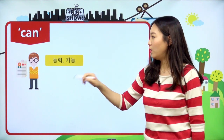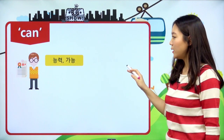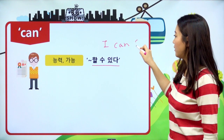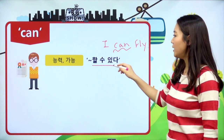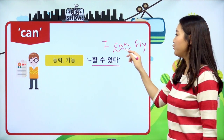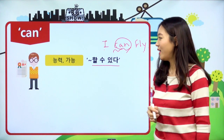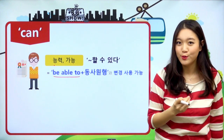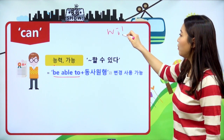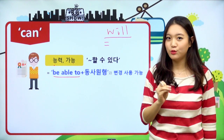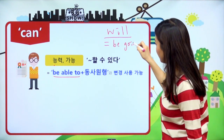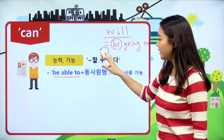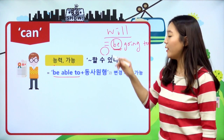첫 번째 조동사 can의 뜻이에요. 능력, 가능입니다. 해석은 '뭐뭐 할 수 있다'라고 해석이 되고, I can fly에서 can이 '할 수 있다'라고 해석이 되는 거예요. 그런데 능력이나 가능을 나타내는 조동사 can은 be able to와 바꾸어 사용할 수 있어요. 지난 시간에 will 배울 때도 will은 be going to와 바꾸어 사용할 수 있다고 했었고, 여기에 있는 이 be동사는 주어의 형태나 시제에 따라서 바뀐다라고 공부를 했어요.